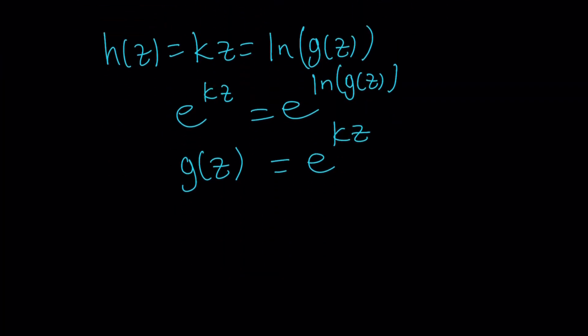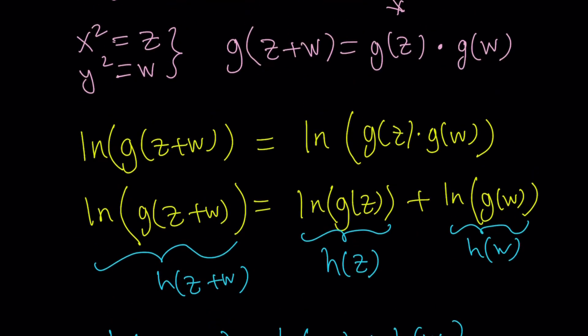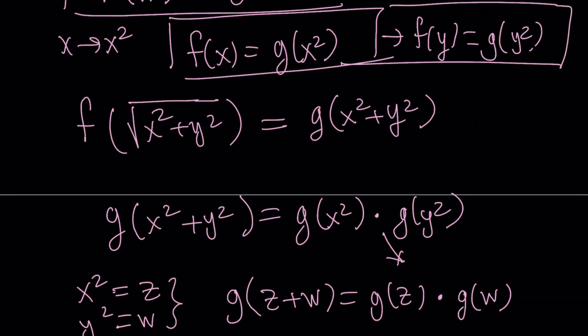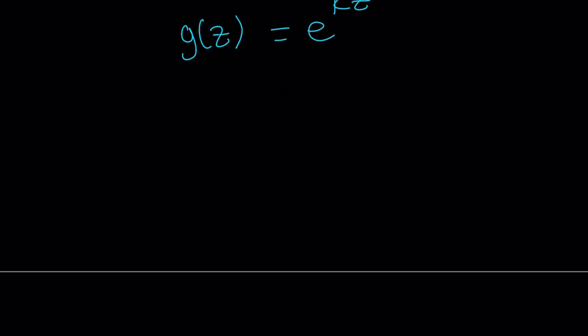But what is gz? If you go back, gx is f of square root of x. So gz would be f of square root of z. Finally, we're almost there. Now, I want to find f of x, but this is f of square root of z. Let's go ahead and replace z with x squared. And you're done. f of x equals e to the power kx squared.